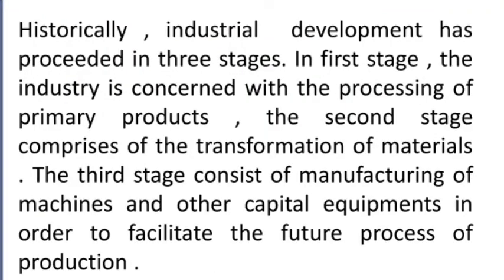Historically, industrial development has proceeded in three stages. The first stage is concerned with the processing of primary products. The second stage comprises the transformation of materials. The third stage consists of manufacturing machines and other capital requirements in order to facilitate the future process of production.